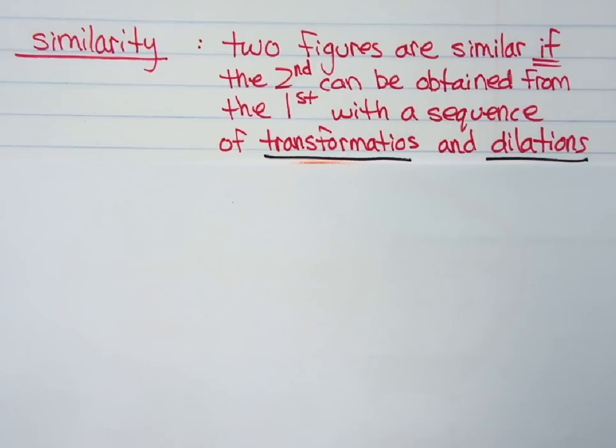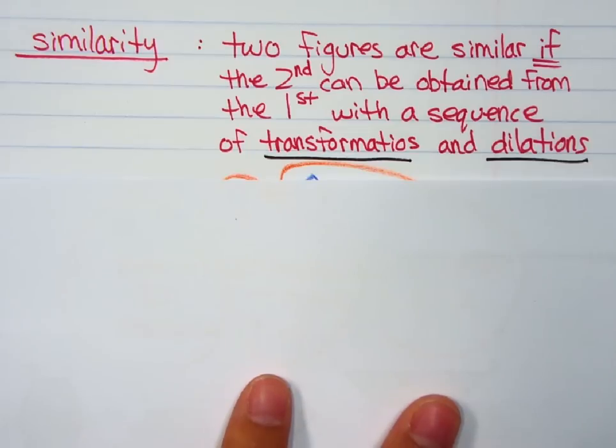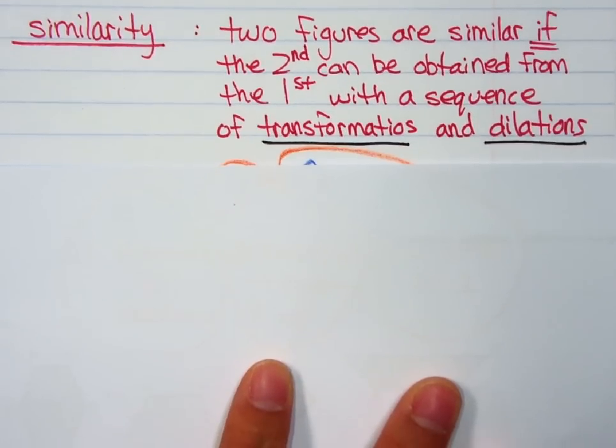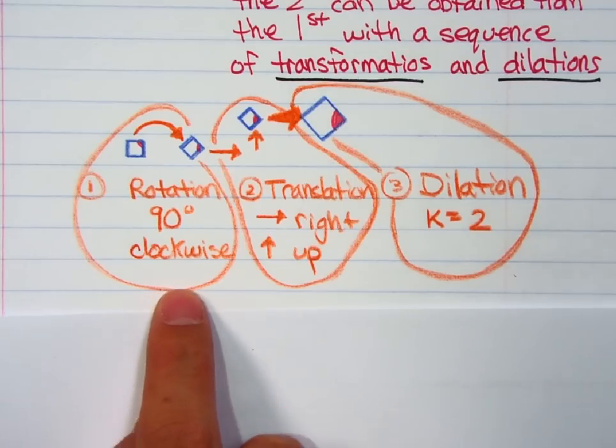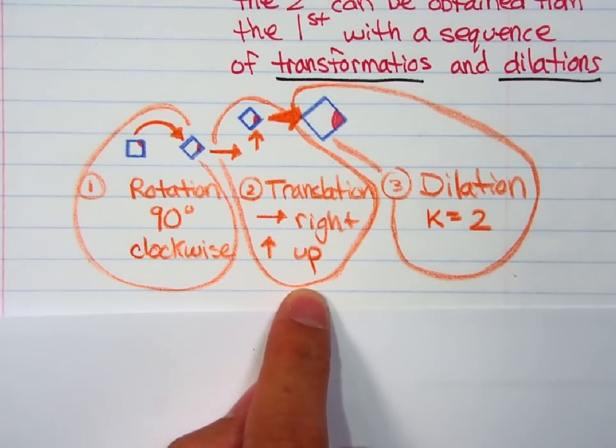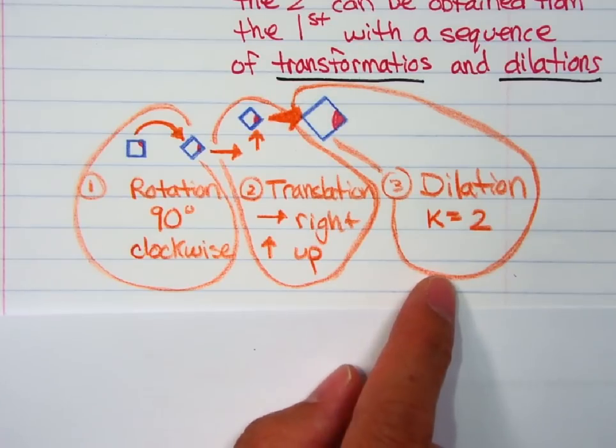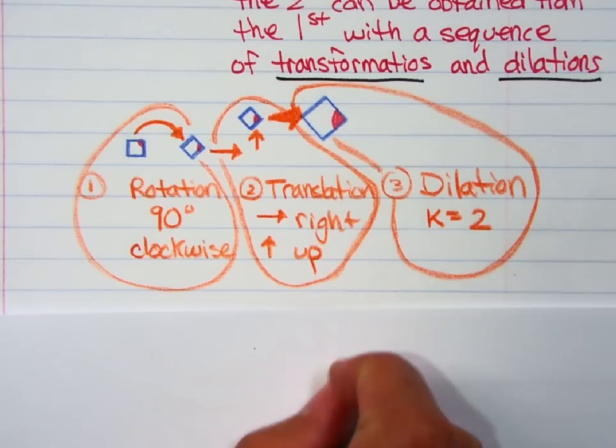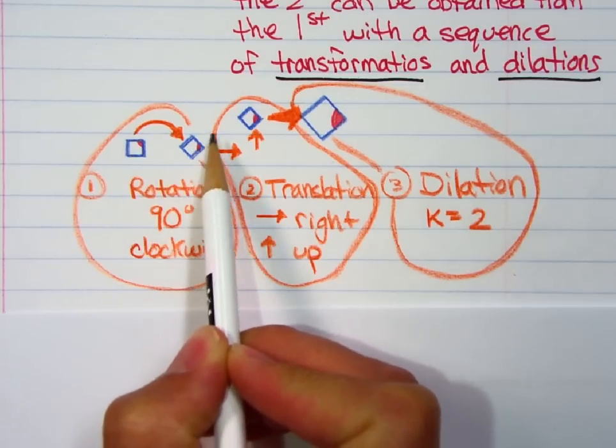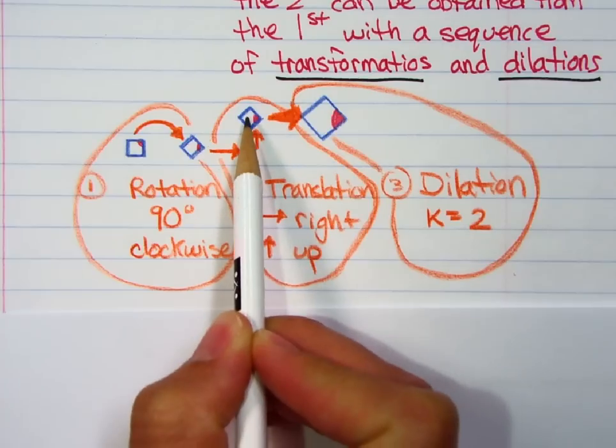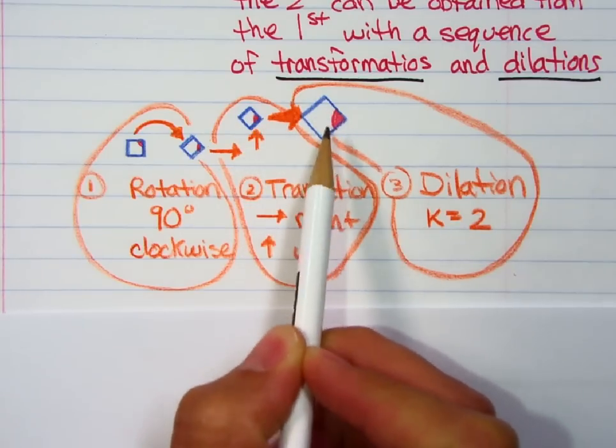All right, so similarity. Two figures are similar if the second can be obtained from the first with a sequence of transformations and dilations. Okay, that's what similarity means. For instance, if I end up rotating it or translating it and then changing its size by dilation, that would be considered the shape that first started, even if I rotated it, even if I translated it to the right and then up, and then I made it grow in size for dilation.